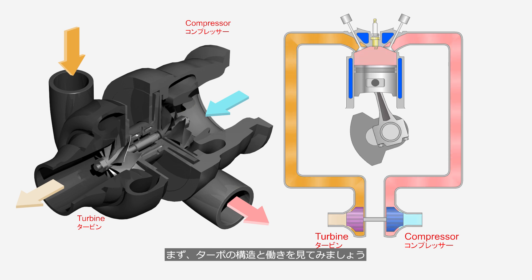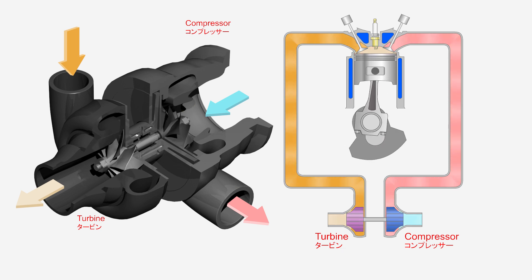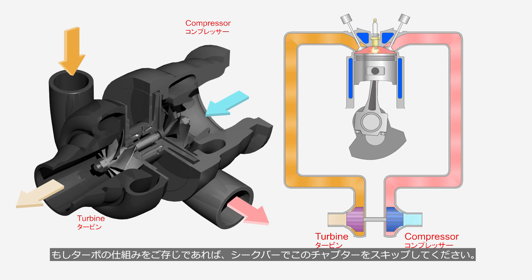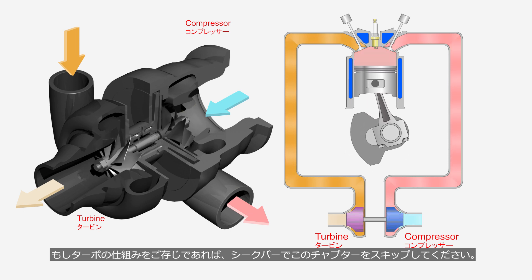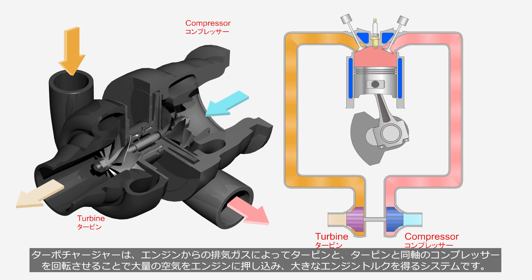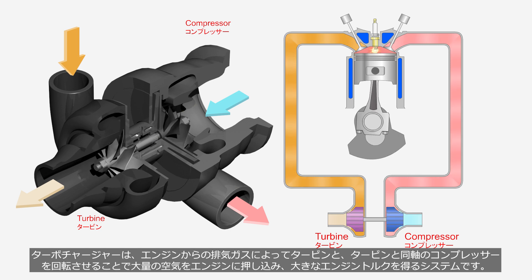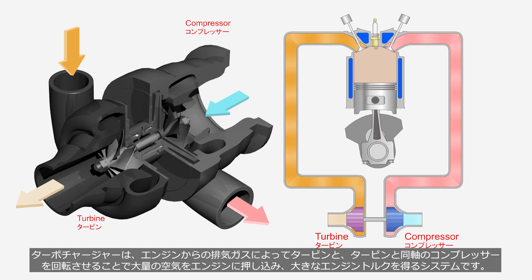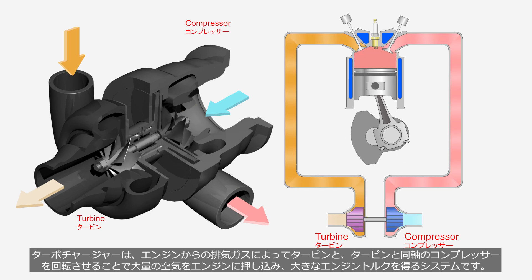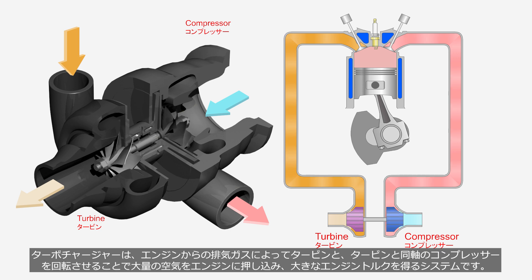Let's take a look at the structure and function of the turbocharger. A turbocharger is a system that, by utilizing exhaust gases from the engine, rotates a turbine wheel and a compressor wheel that shares the same axis with the turbine wheel. This process forces a large volume of air into the engine, resulting in significant engine torque.